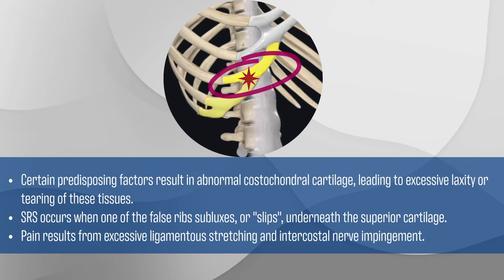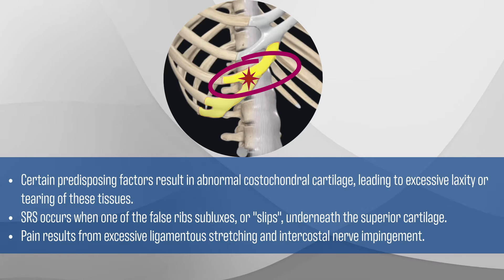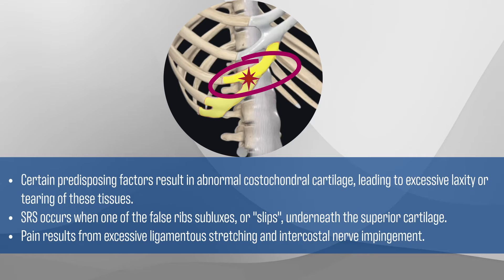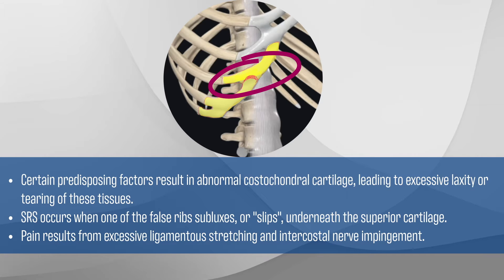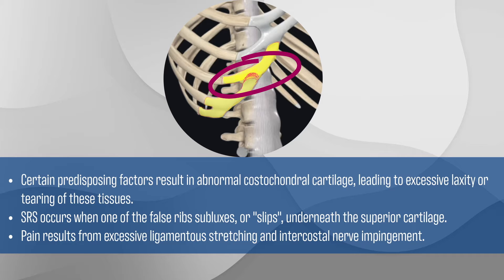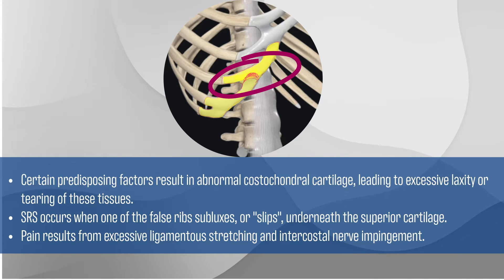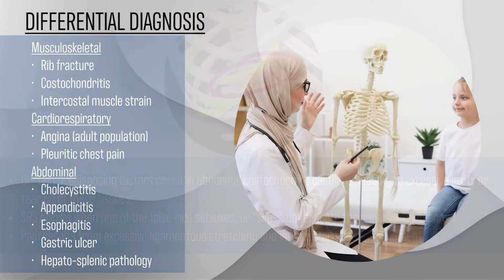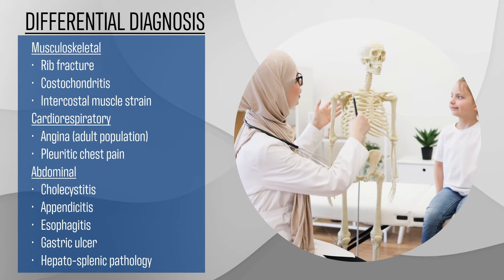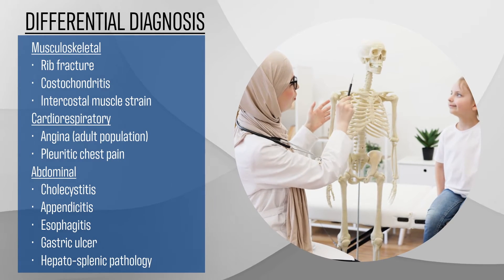Certain predisposing factors can cause abnormal costochondral cartilage, resulting in excessive laxity or tearing of these tissues. SRS occurs when one of the false ribs slips underneath the superior cartilage, leading to pain due to excessive ligamentous stretching and impingement of intercostal nerves. It is essential to consider and rule out other potential causes of pain.